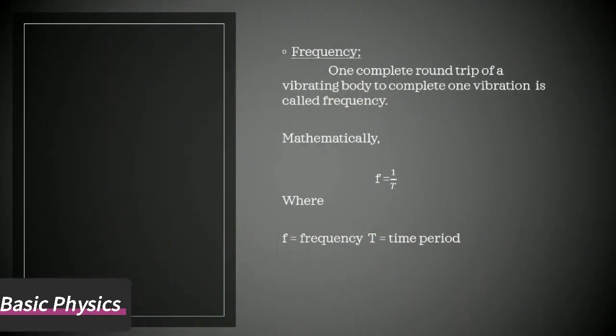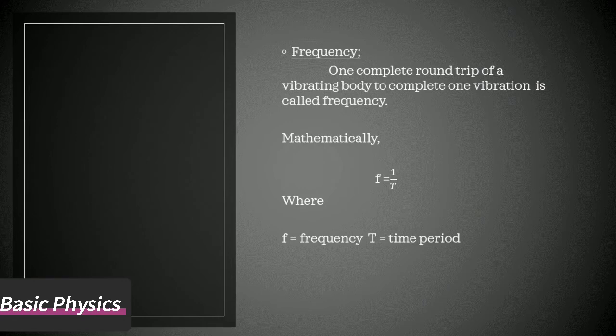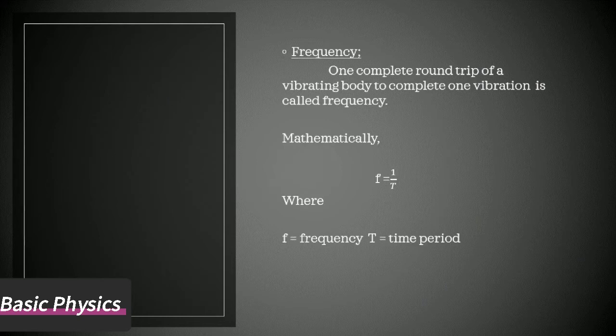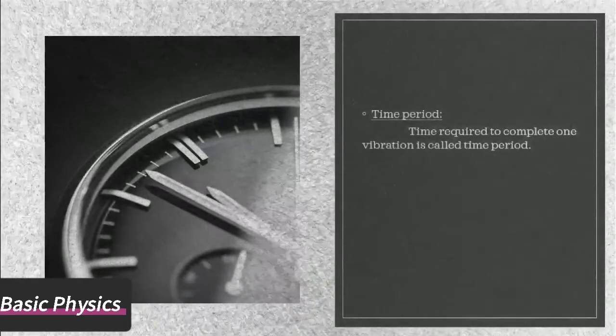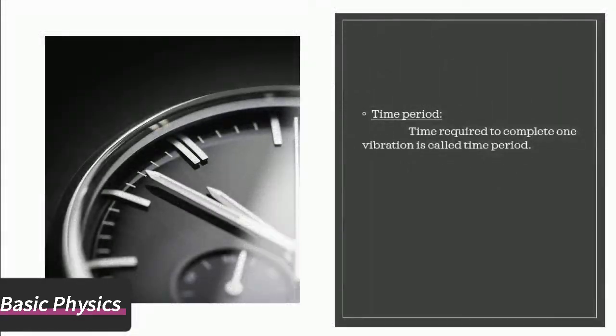Frequency: one complete round trip of a vibrating body to complete one vibration. Frequency = 1/time period. Its unit is per second. Time period: time required to complete one vibration is called time period.